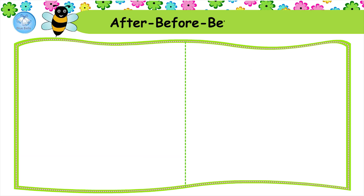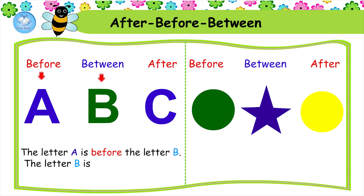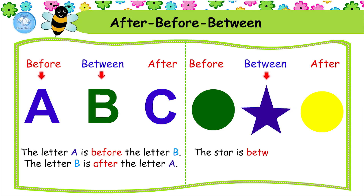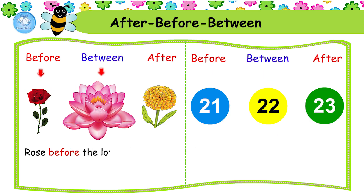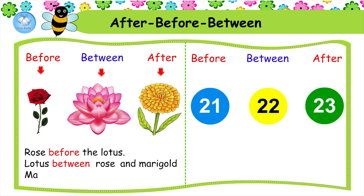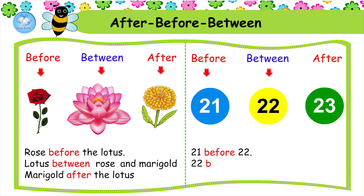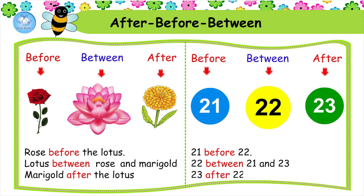After, before, between. The letter A is before the letter B. The letter B is after the letter A. The star is between the circles. Rose is before the lotus. Lotus is between rose and marigold. Marigold is after the lotus. 21 is before 22. 22 is between 21 and 23. 23 is after 22.